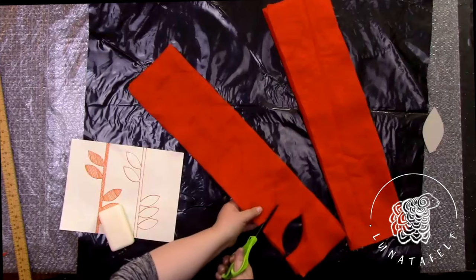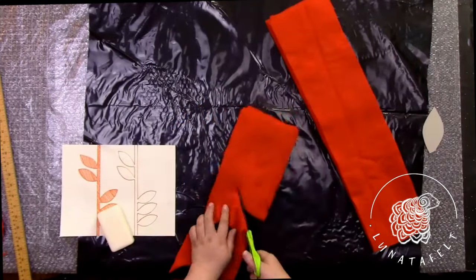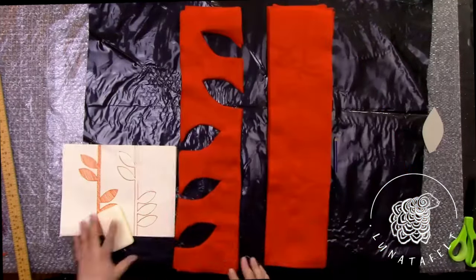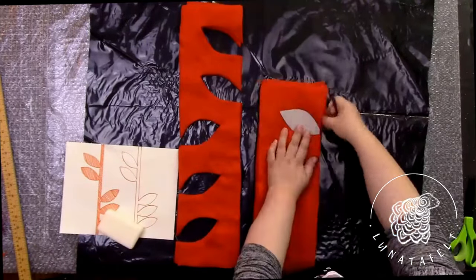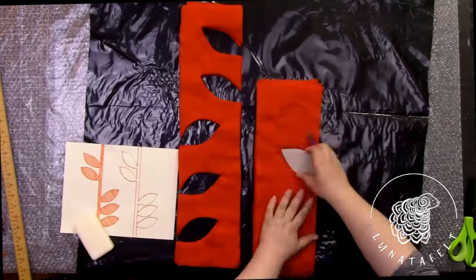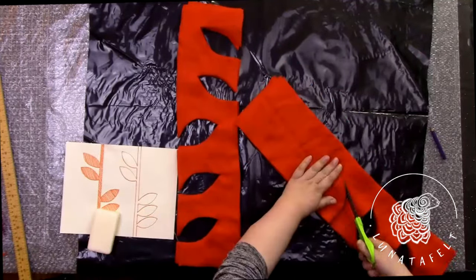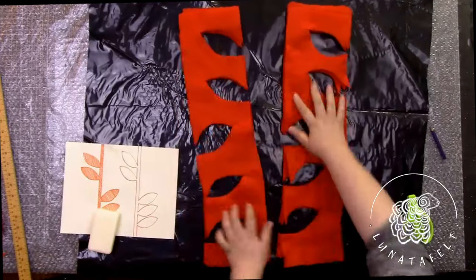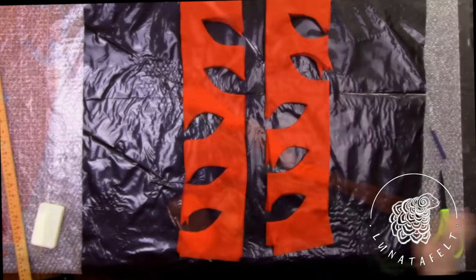The leaves I cut from the pre-felt, of course, I do not throw away but set aside. They will be very useful for my next project. In felting, there are practically no waste materials. I repeat the same actions on the second part of the pre-felt strips. Similarly, I outline the leaves with the template and cut them out with scissors. If you plan to make several similar items, you can prepare blanks from pre-felt of different colors in advance, saving a lot of time.